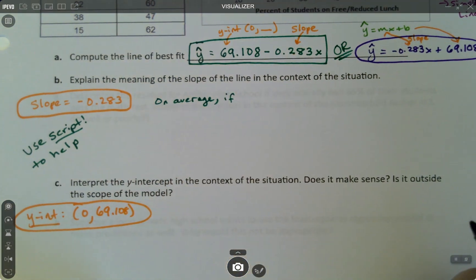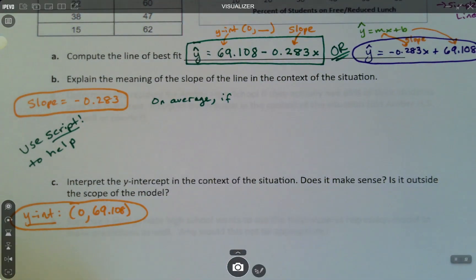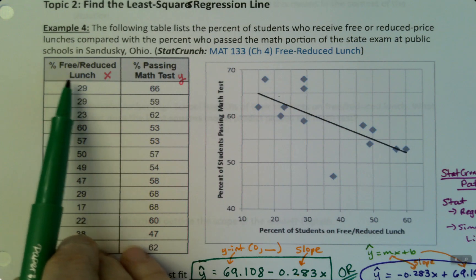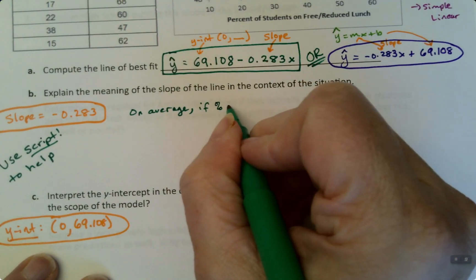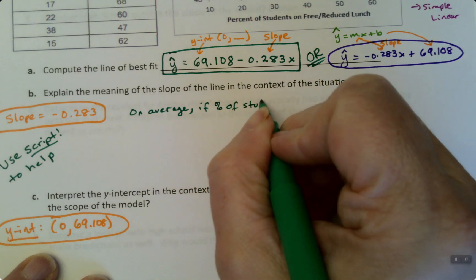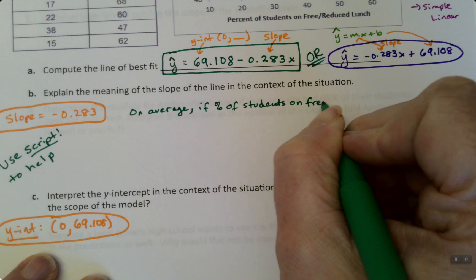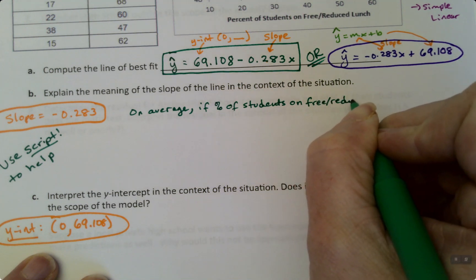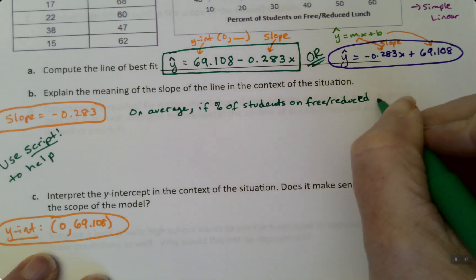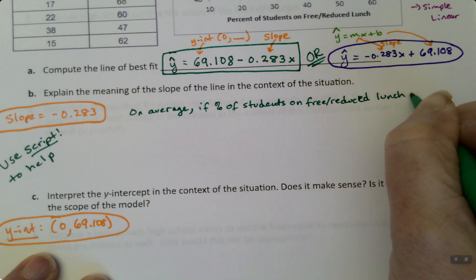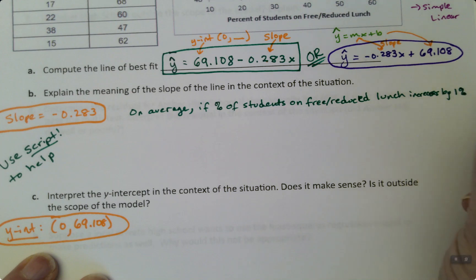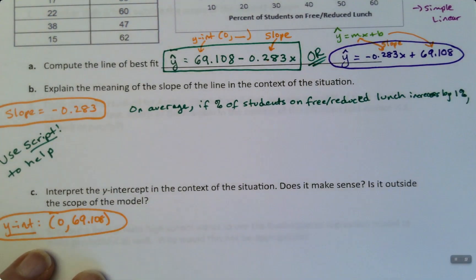And it said X, but I'm not going to say X, it said X in quotes, meaning I have to put the context in. And my context is the percent of students on free reduced lunch, that's X. So if the percent of students on free reduced lunch increases by one percent.